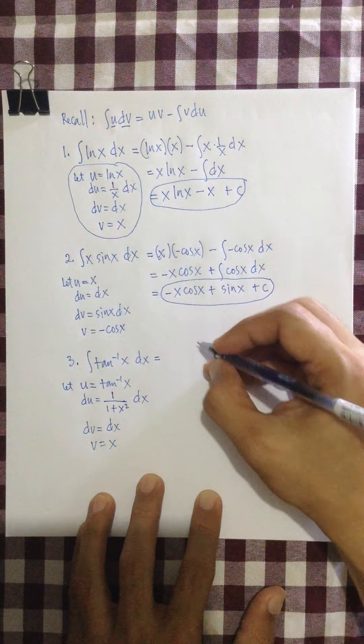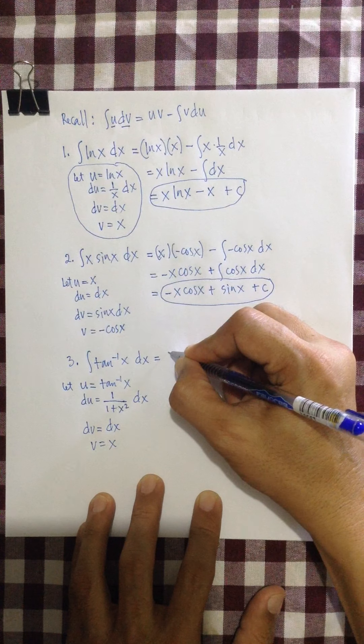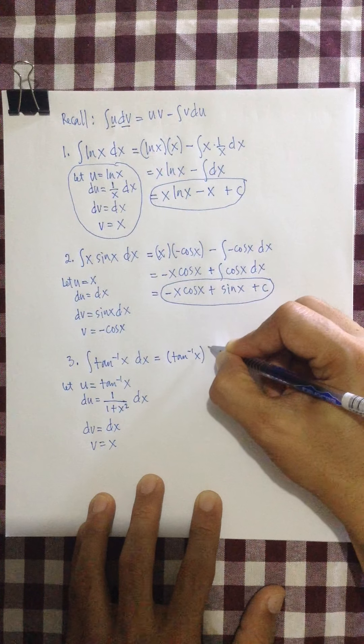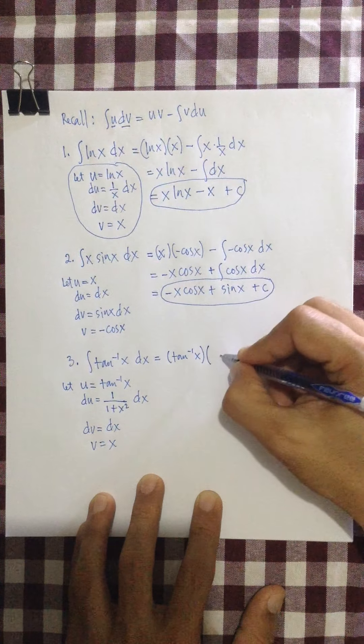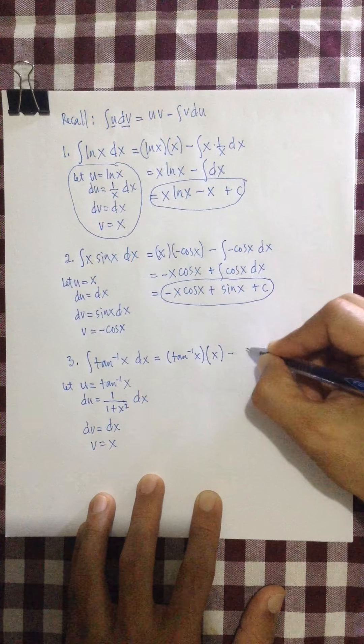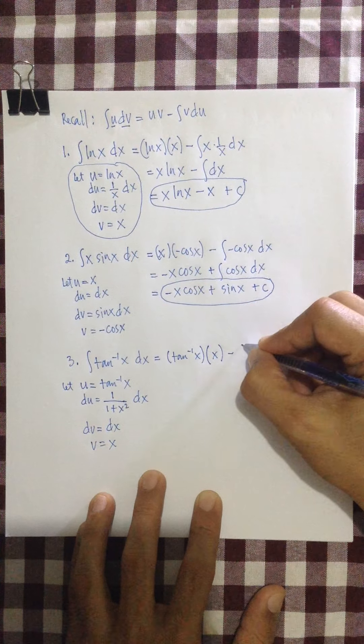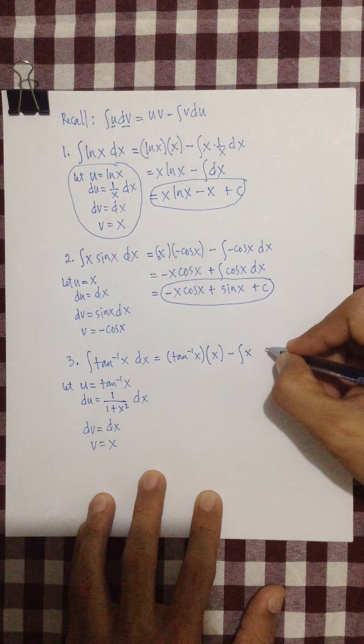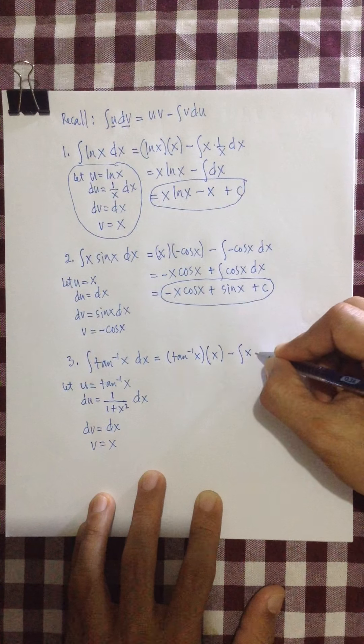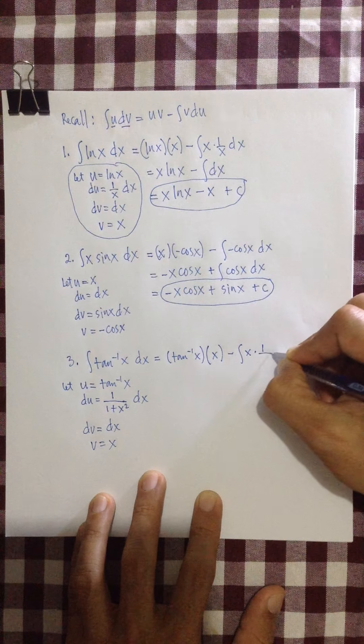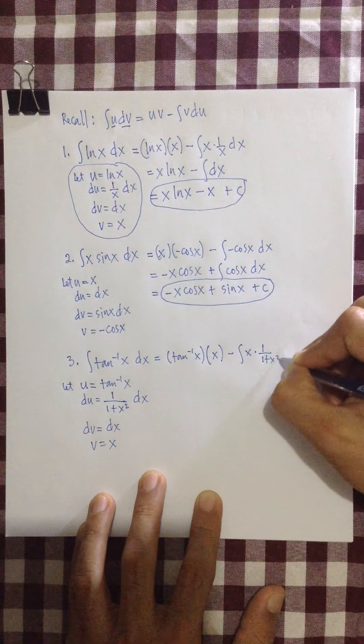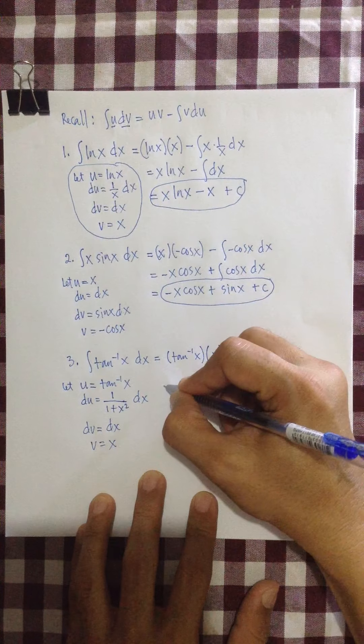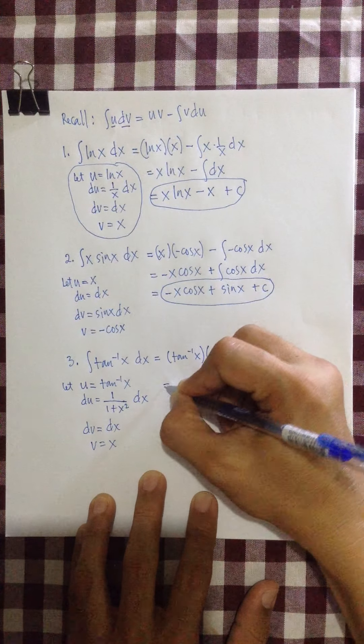You know, substitute, following the formula. So first, we have u, which is tangent inverse of x times v, which is x, minus integral of v, which is x, and du, which is 1 over 1 plus x squared dx.